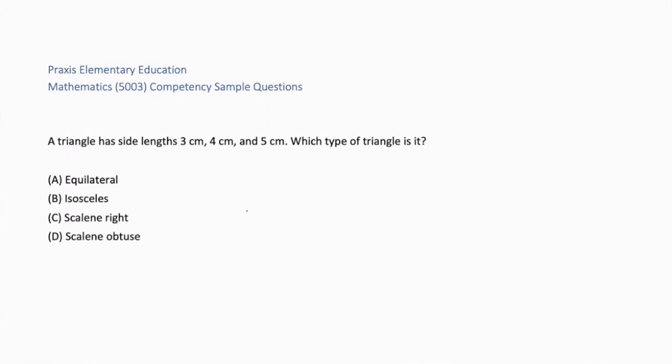A triangle has side lengths 3 centimeters, 4 centimeters, and 5 centimeters. Which type of triangle is it? A, equilateral. B, isosceles. C, scalene right. Or D, scalene obtuse. Let's work through the process of elimination. A, equilateral means all three sides are the same. 3, 4, and 5 are all different. B, isosceles means two sides are the same. None of the sides are the same. So the answer must either be C, scalene right, or D, scalene obtuse. Scalene means all sides are different.